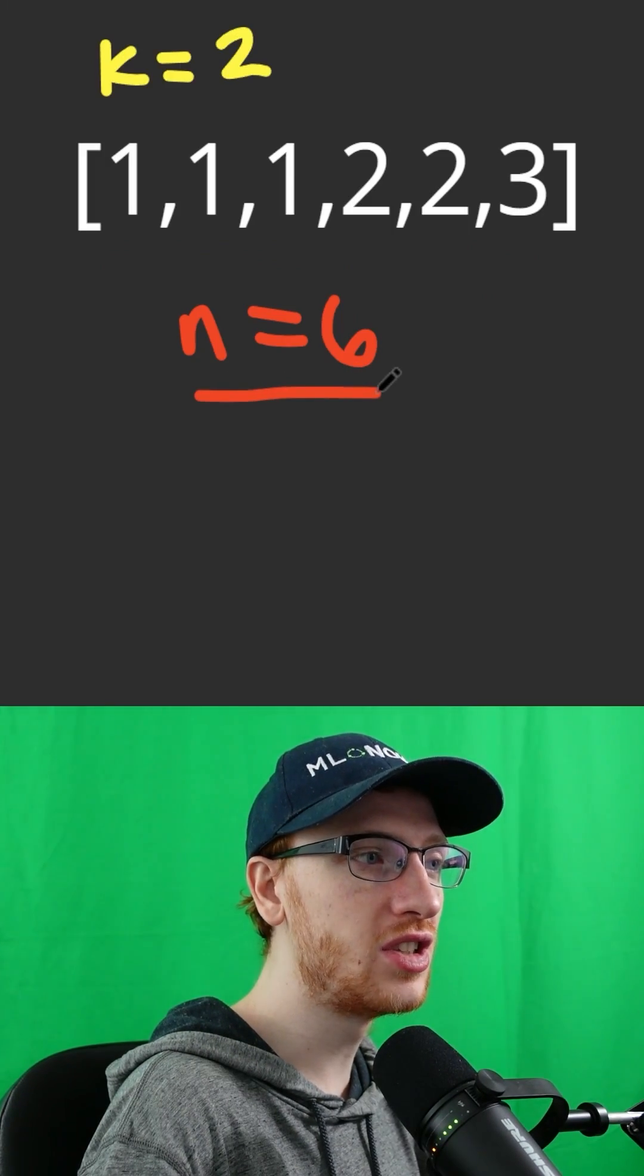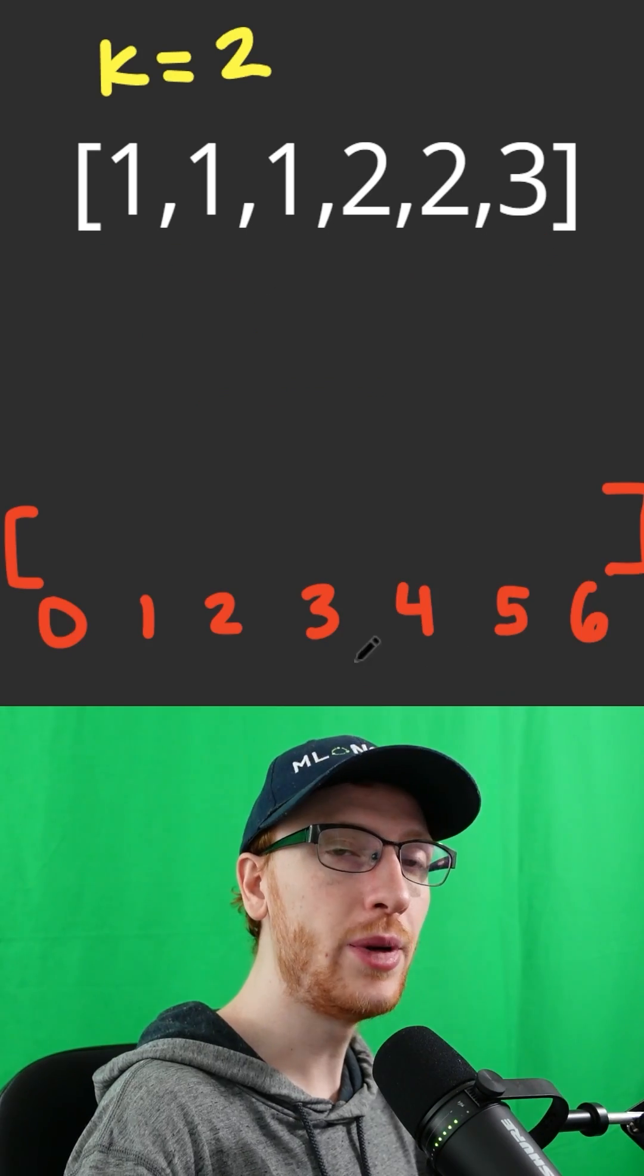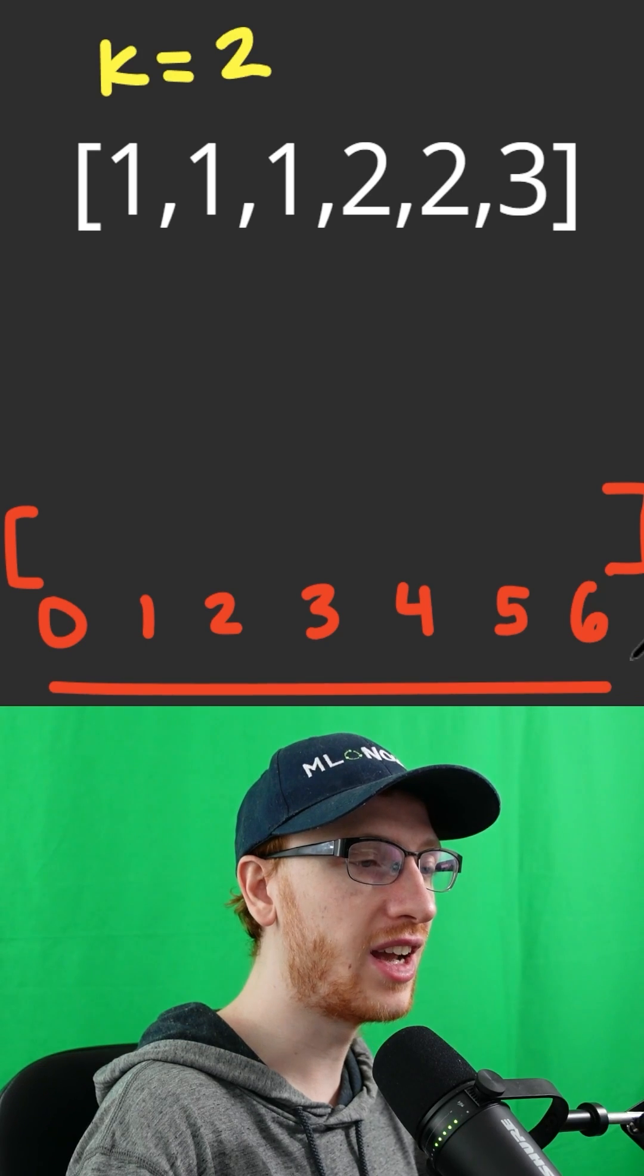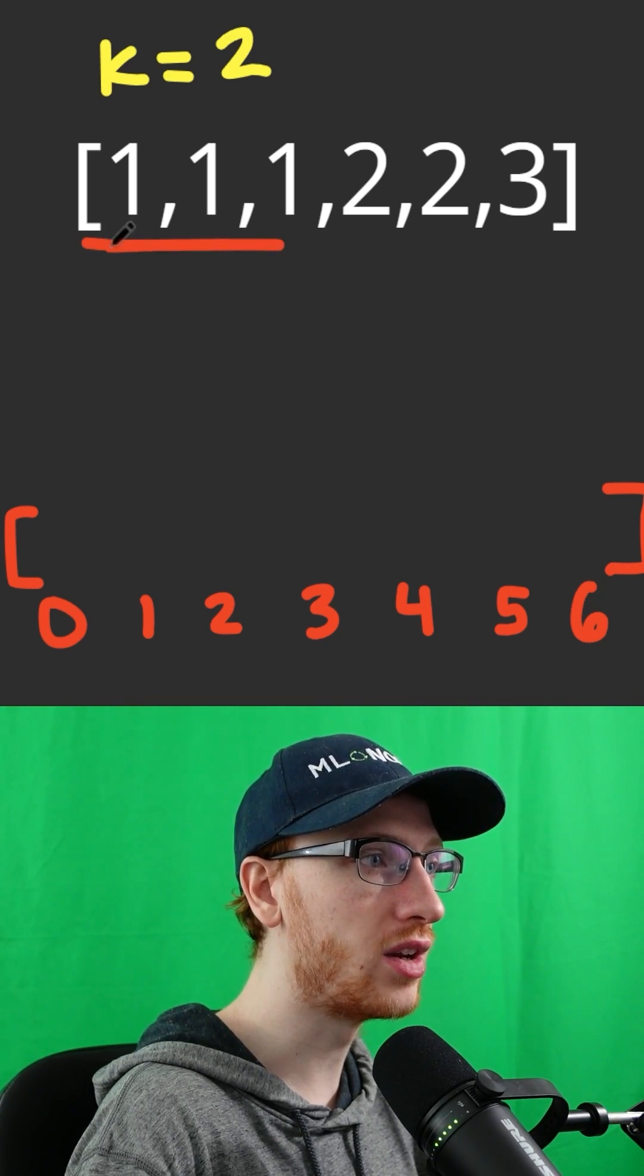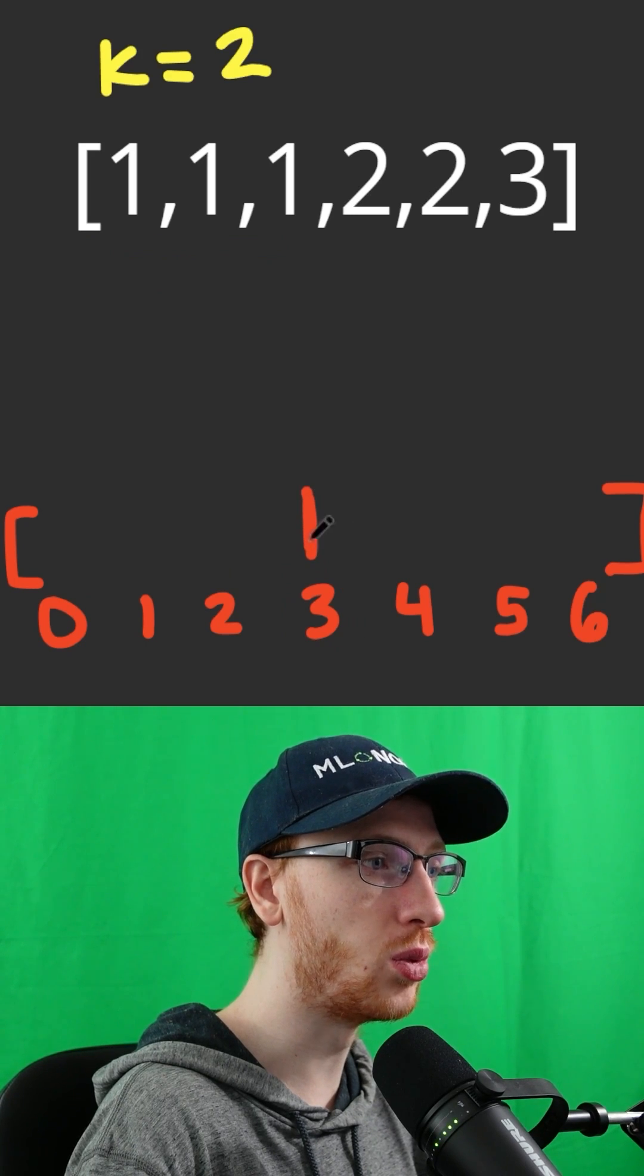If we had n equals 6 numbers in the array, there's no way any number could occur more than 6 times. That means we could make an array where the index is the frequency. If you had three 1s, we would put that in the 3 spot, we would put 1 right there.